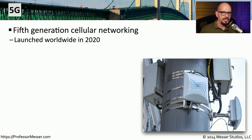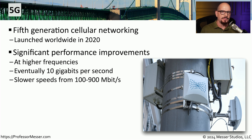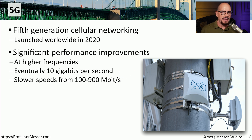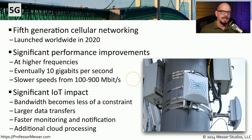A more modern version of mobile networking is 5G networking, which was introduced in 2020. This greatly improved the performance of wireless mobile networks. With the right configuration, the goal is to achieve 10 gigabits per second as the overall throughput. In other implementations, you may see more reasonable speeds such as 100 to 900 megabits per second. 5G has dramatically changed the way we look at mobile connectivity, especially since we're now able to get similar bandwidths over mobile providers that we have with wired network providers in our homes.